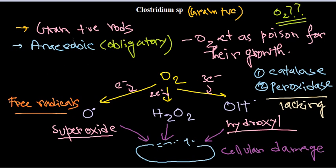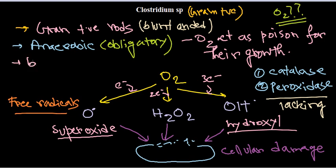Clostridium species are gram-positive rods with blunt ends. They can be cultured in blood agar in the laboratory.